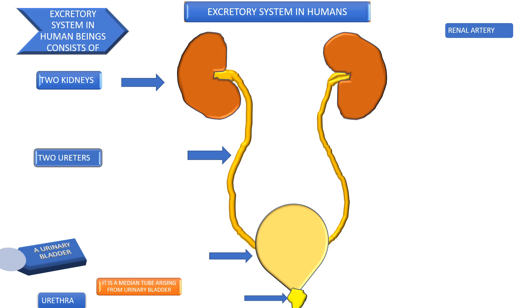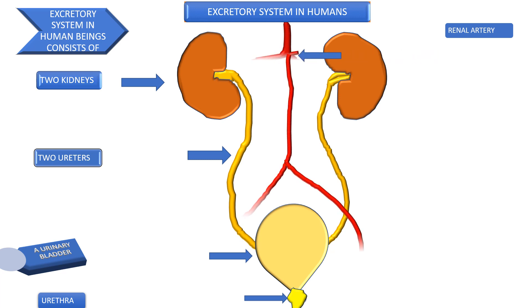Renal artery and renal vein are also key components of the excretory system.